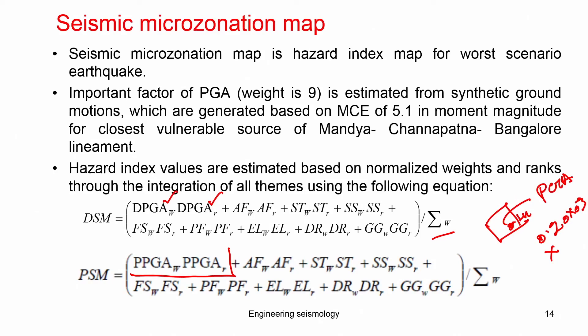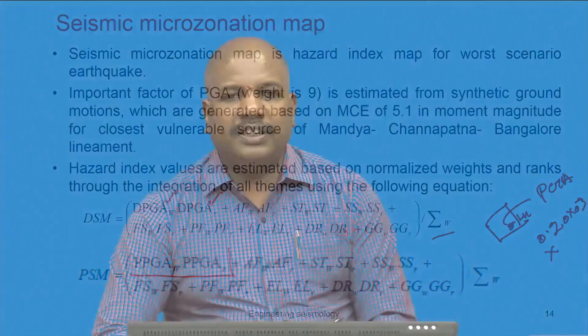This is the methodology for how each hazard component, weight, and ranking is taken to estimate the hazard index values. In the next class, we are going to discuss how this can be applied for the microzonation of Bangalore. Thank you very much for watching this video; we look forward to the next class.